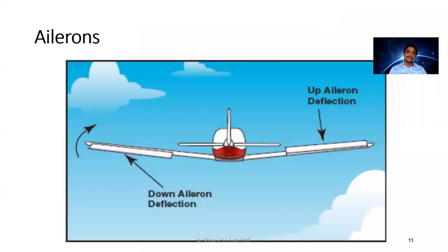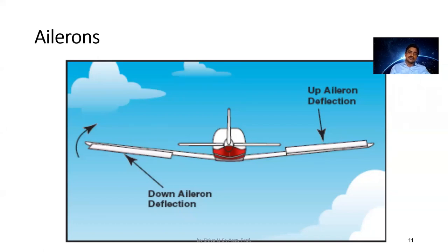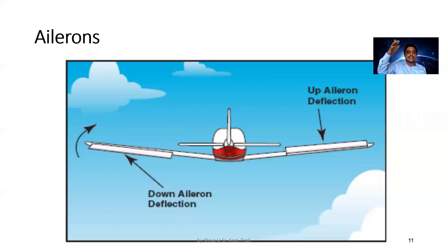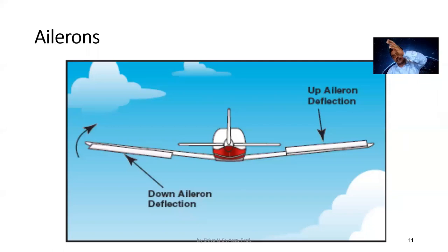In this image we can see that when the right aileron is lifted up, the right wing rises and the left wing goes down, so the aircraft goes in the anti-clockwise direction. When the left aileron is lifted up, the aircraft will be going in the clockwise direction, when viewed from the tailward direction.